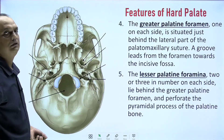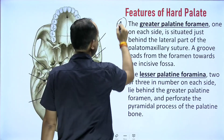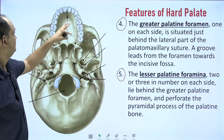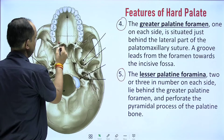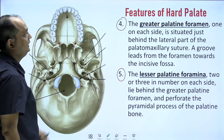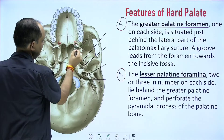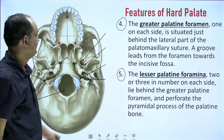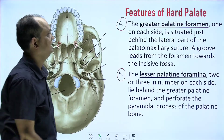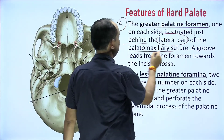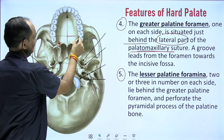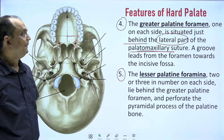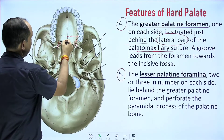Two very important exam questions involve spotting the greater and lesser palatine foramina. When you see the hard palate from below, on both sides posteriorly you will find two large foramina — these are the greater palatine foramina. Just behind these you will find smaller foramina, possibly more than one in number — these are the lesser palatine foramina. The greater palatine foramen is one on each side and is situated behind the lateral part of the palatomaxillary suture.